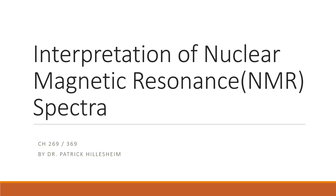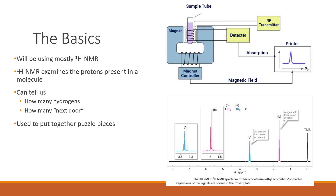Today we're going to talk about how to interpret NMR spectra. We'll be taking NMR spectra for our compounds as we go through and complete the experiments in this lab series. We needed to learn a little bit about the background of NMR and how we're going to use an NMR spectrum to determine what our compounds are.